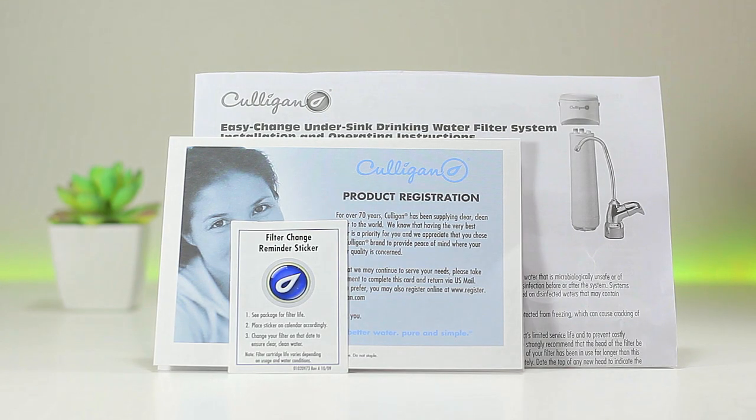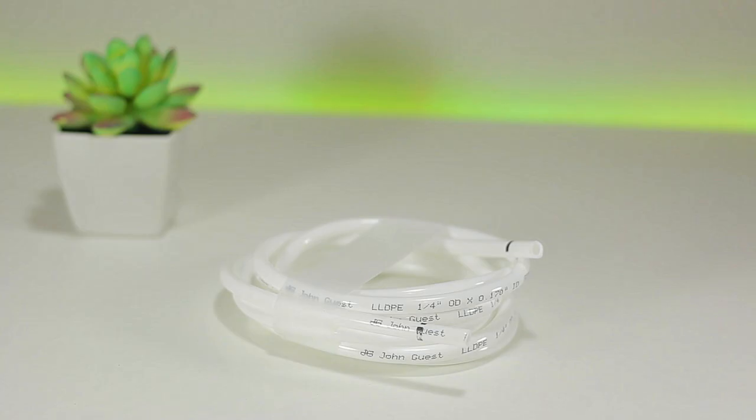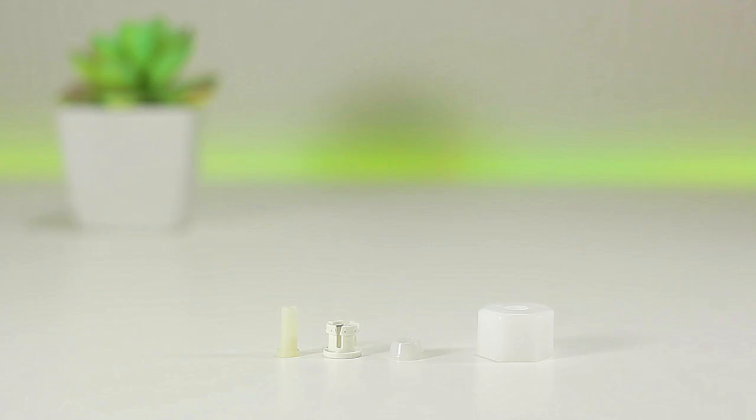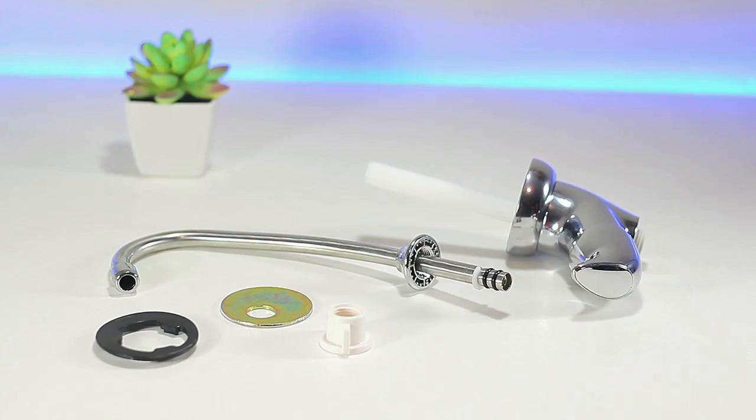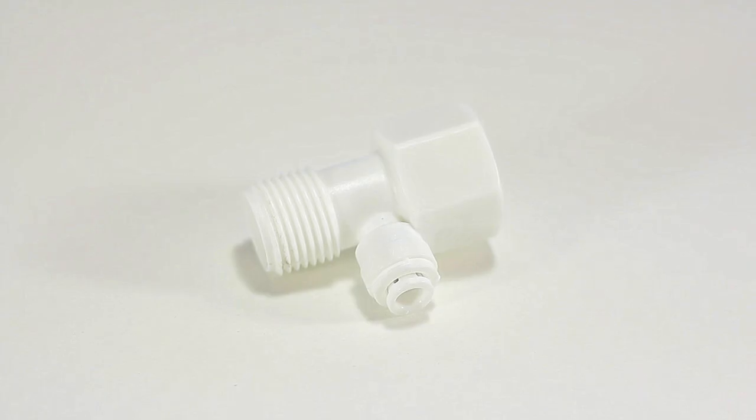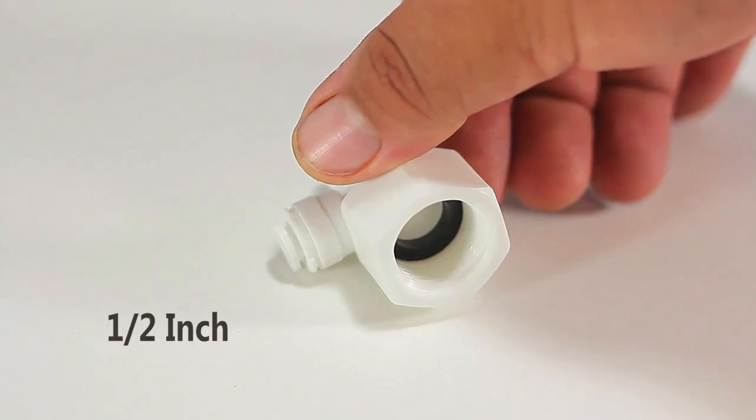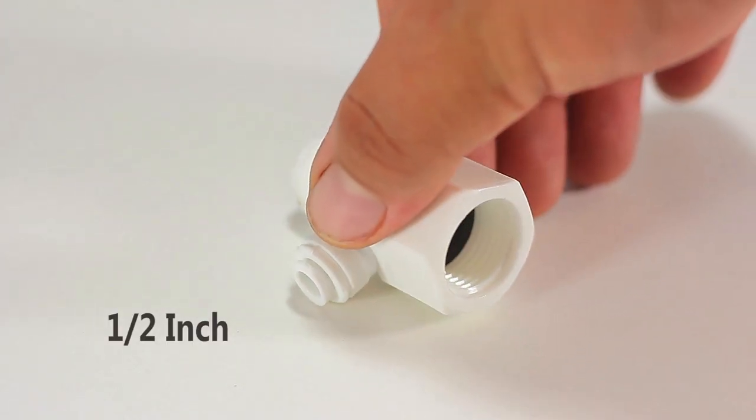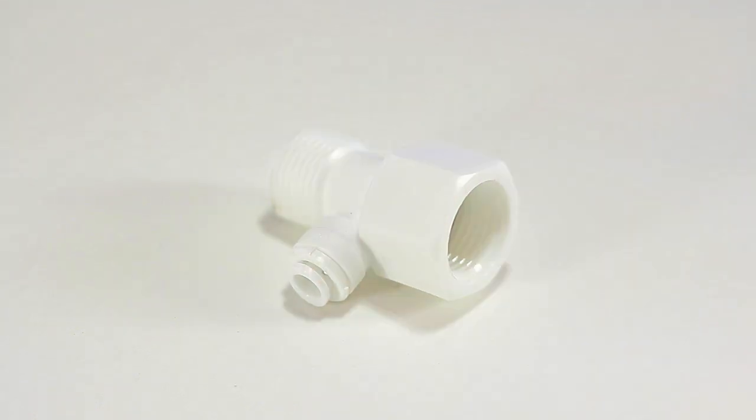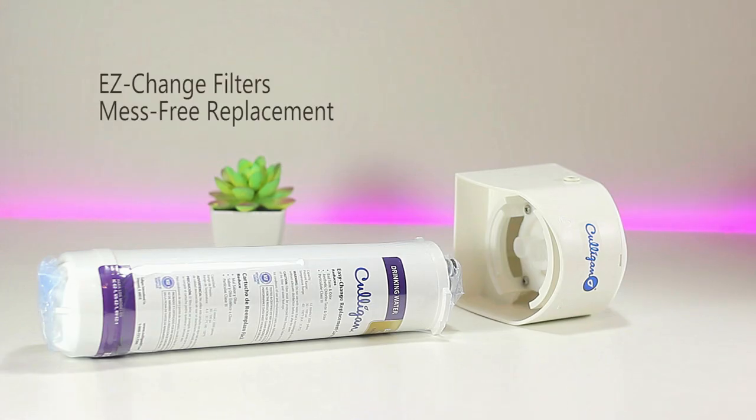This is what we get in the box: the manual and packet information, one quarter inch plastic tubing, tubing supply adapters, three mounting screws, the lead-free faucet and adapters, a plastic T with a male half inch side, a female half inch side, and a female one quarter inch side for the plastic tubing, the filter head with built-in bracket, and the RC Easy One Level 1 replacement filter cartridge.